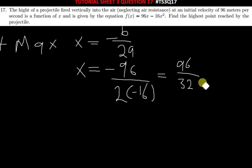The question is saying find the highest point reached by the projectile. So the highest point at maximum, the value of X is 3. And we've been taught that the height of the projectile fired vertically is given by this function here.